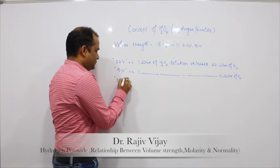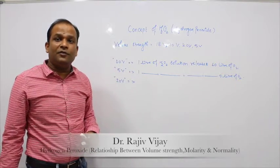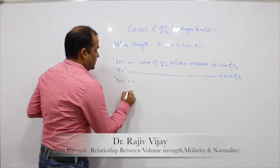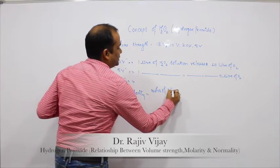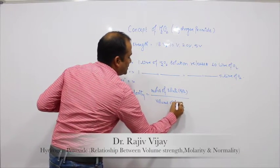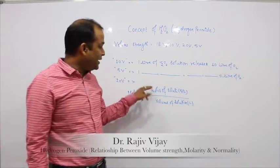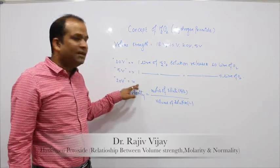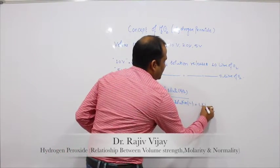Likewise, if 20V is given, it means 20 liters of oxygen per 1 liter of H2O2. We have to find out the molarity. The formula for molarity is: molarity equals moles of solute (H2O2) divided by volume of solution in liters. We have to find out the moles because the volume of solution is always given as 1 liter.